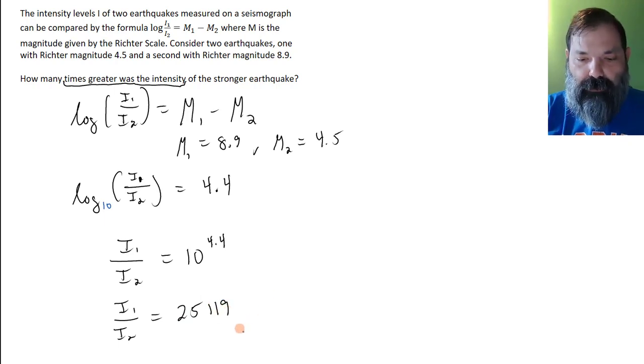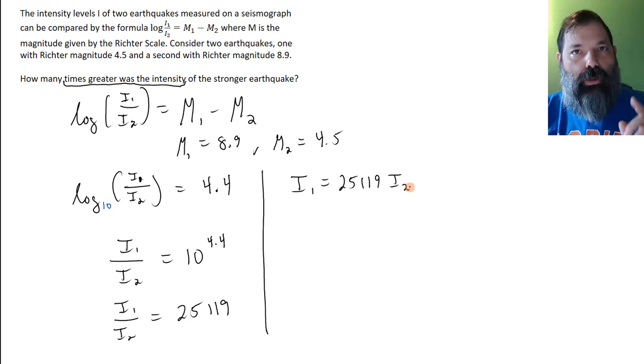So then, if we multiply by i sub 2, then i sub 1 is 25,119 i sub 2.